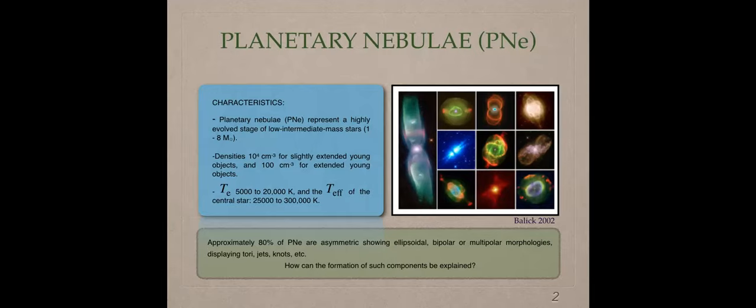We know that planetary nebulae represent a highly evolved stage of low intermediate mass star. This means that a star with an initial mass of 1 to 8 solar masses will become a planetary nebula. The densities of this object is 10^4 particles per cubic centimeter for a slightly extended object and 100 particles per cubic centimeter for extended objects. The temperature for planetary nebulae is 5,000 to 20,000 Kelvin.